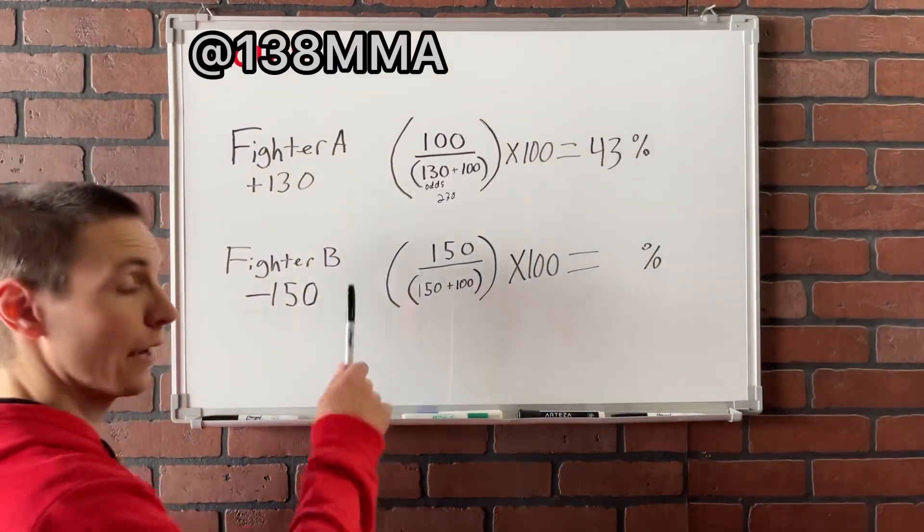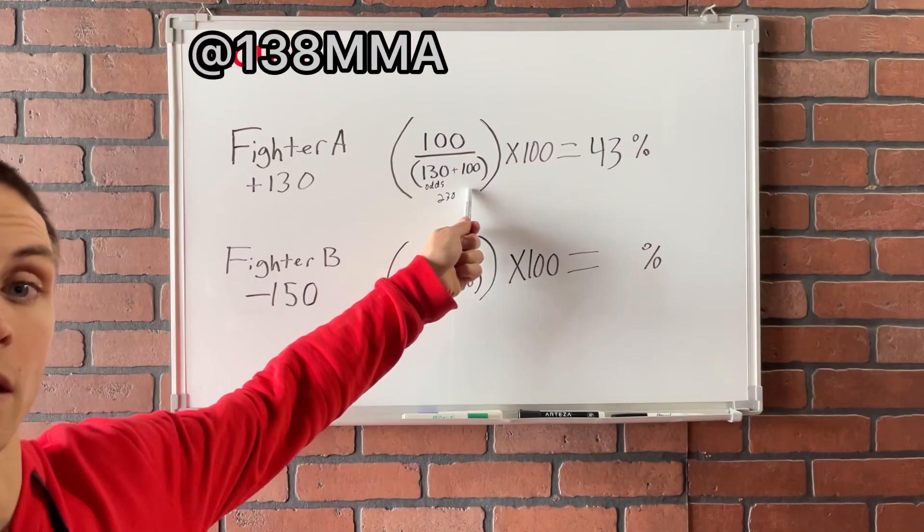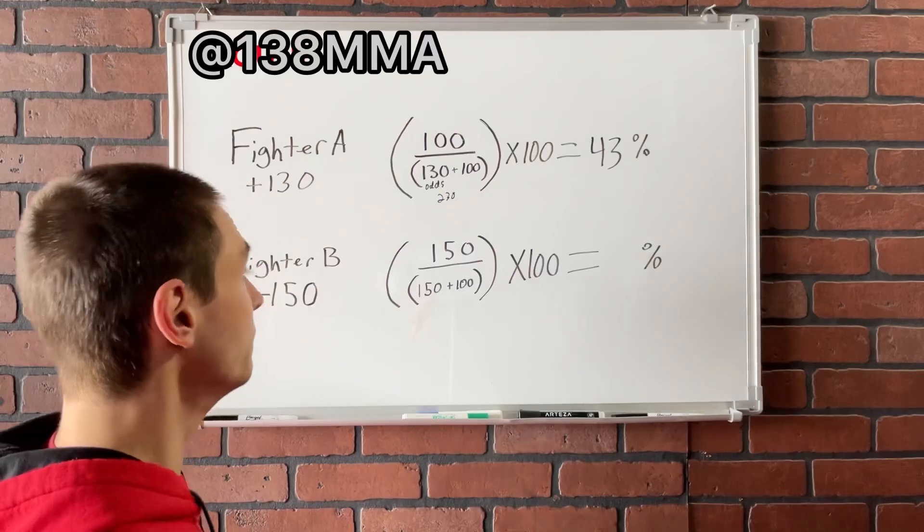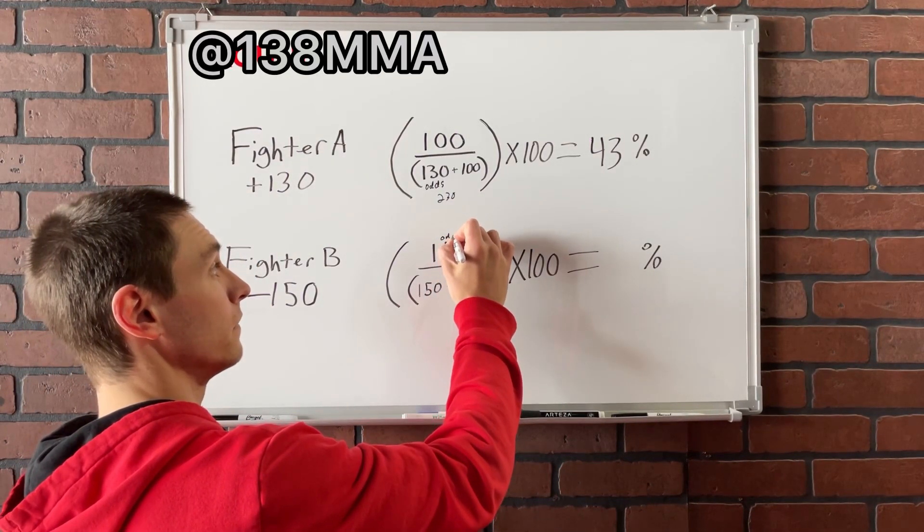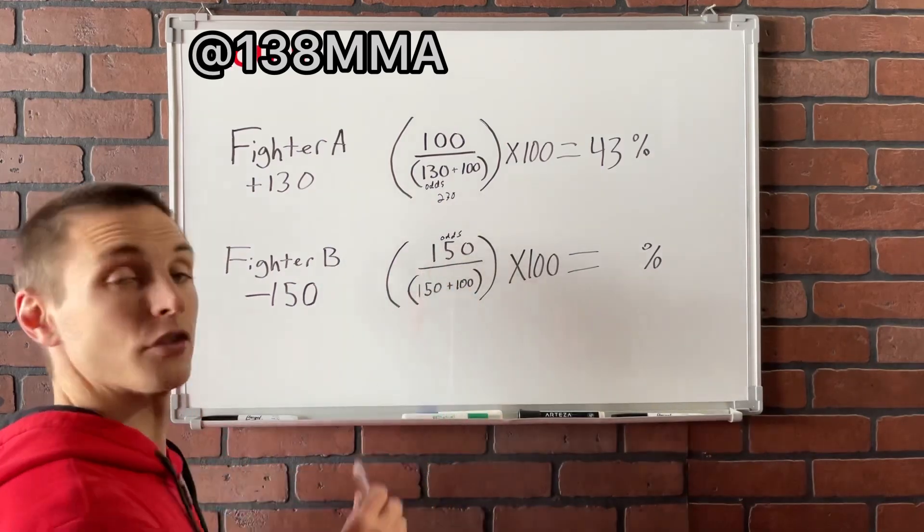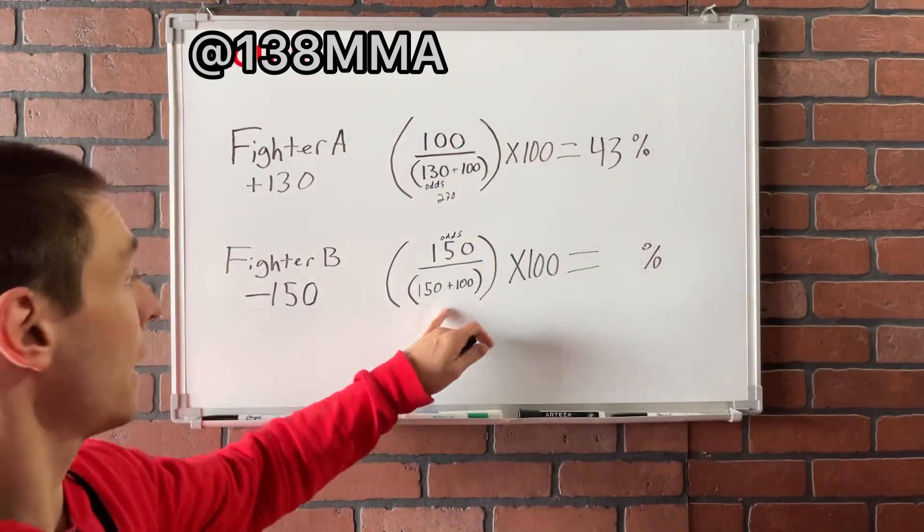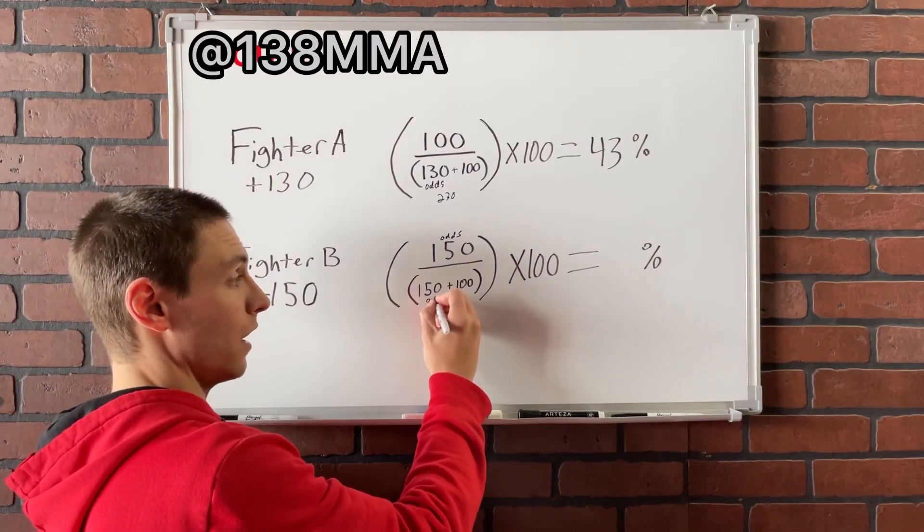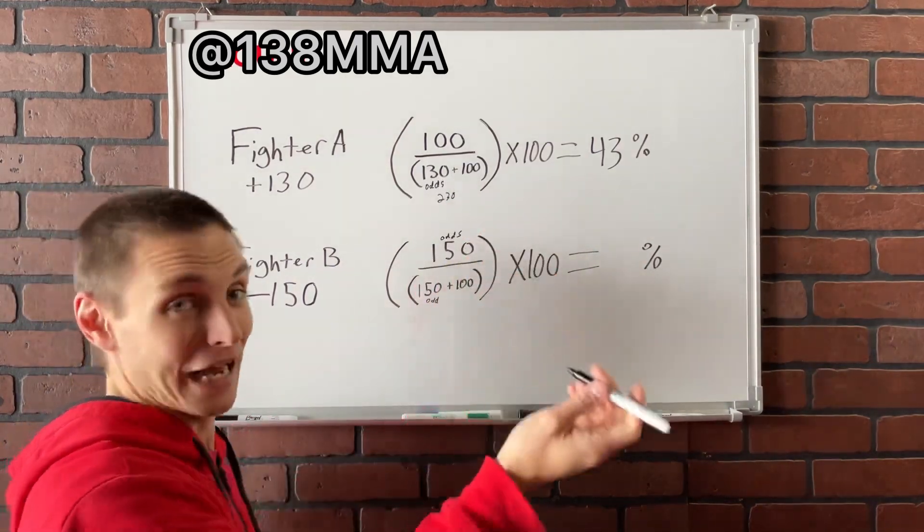Now fighter B, on the other hand, this one's a little bit different because it's not the same calculation as here, but it's still just as simple to get there. And in fact, in this example, it's actually really simple to get there. So in this one, you have the odds as the top number instead of just the 100 because this one will always be 100. This will be the odds. Now, when you look down here, you also have the odds here. So obviously the odds plus 100, very similar to what we did here. Actually, the exact same as what we did here, just with the odds of this fighter, not the other fighter.